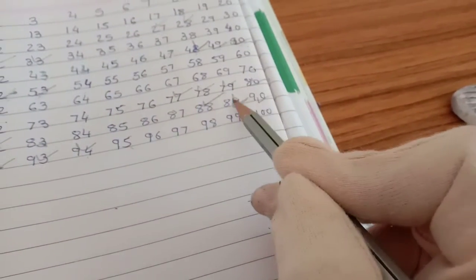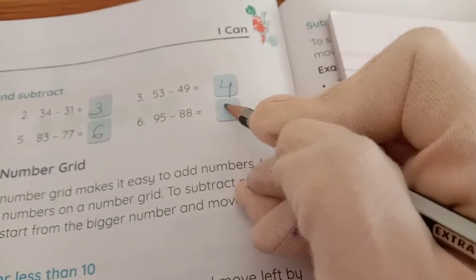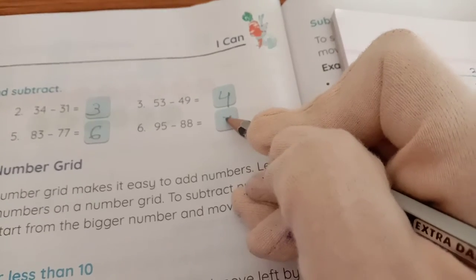5, 6, 7. So we have to go back 7 steps. 95 minus 88, answer will get 7.